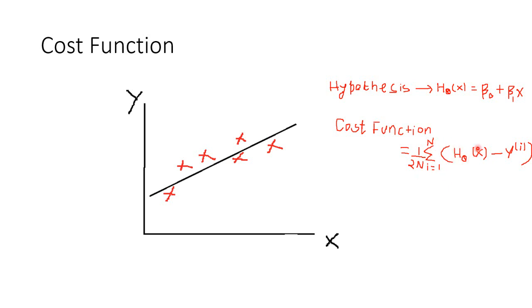The hypothesis is the regression line which has the equation beta0 plus beta1x minus yi. So what is y here? y is the output value.